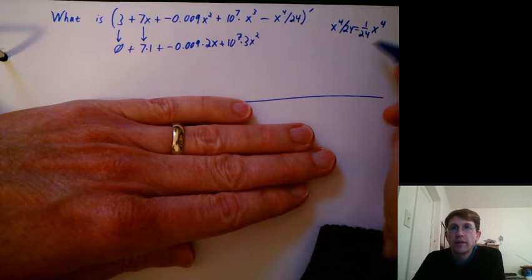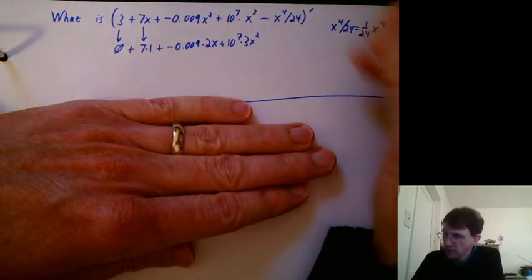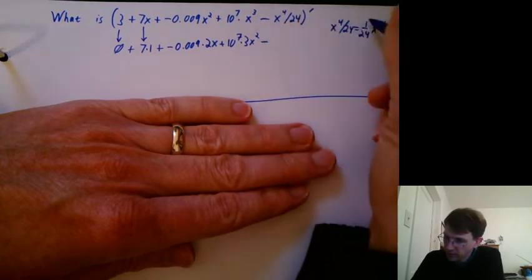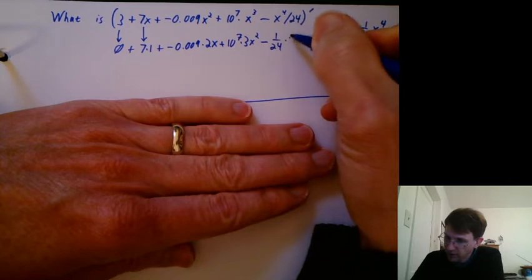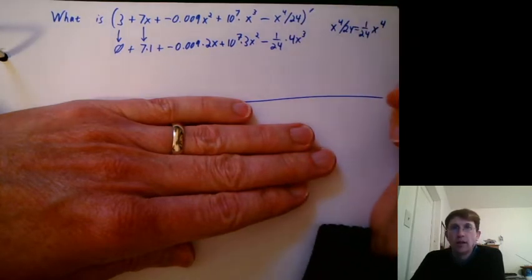So when I write it that way, then I see, oh, this is just a constant multiplier on x to the 4th. I still have a minus here. So I'm going to copy the constant multiplier, 1 over 24. And then derivative of x to the 4th is 4x cubed. And I'm done.